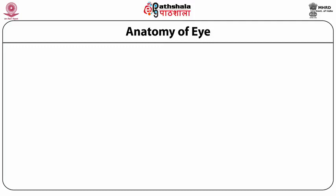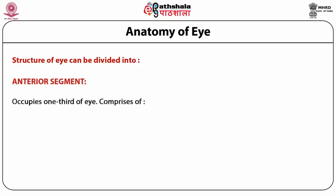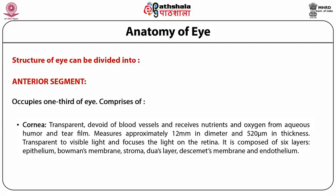Before getting into the nuances of ocular drug delivery systems and their formulation designing, let us understand the anatomy of the eye. The structure of an eye is divided into anterior and posterior segments. The anterior segment occupies around one-third of the eye and comprises the cornea, which is a transparent collagenous structure devoid of blood vessels, receiving nutrients and oxygen from aqueous humor and tear film. It measures approximately 12 mm in diameter and is around 520 micrometers thick. The cornea is composed of six layers: epithelium, Bowman's membrane, stroma, Dua's layer, Descemet's membrane, and endothelium.